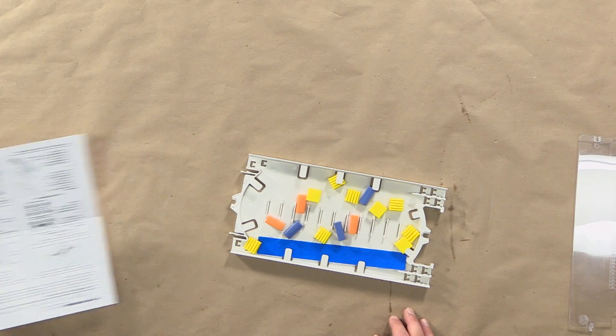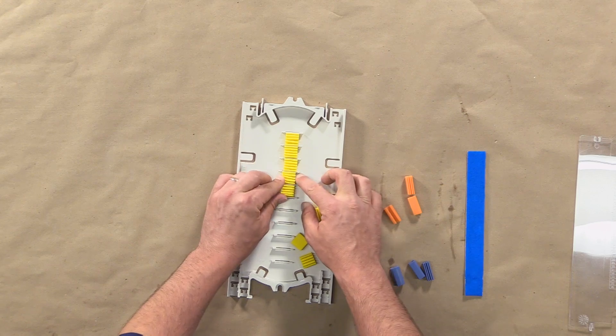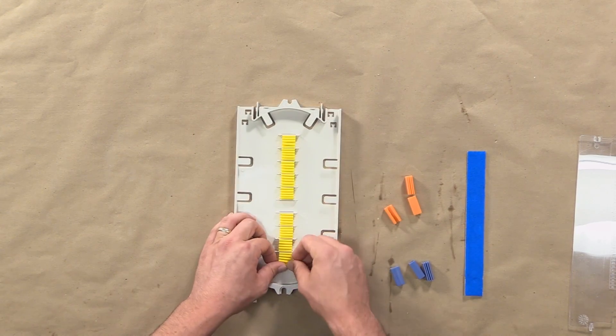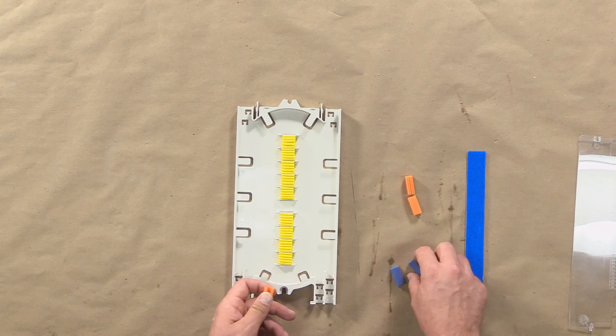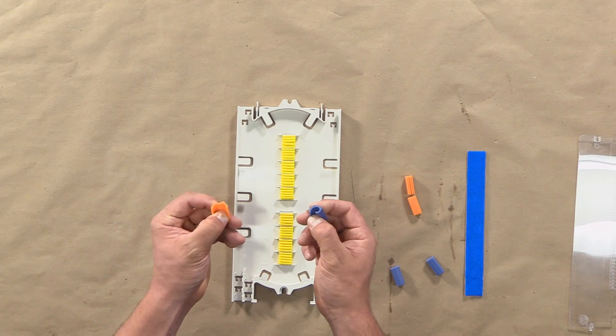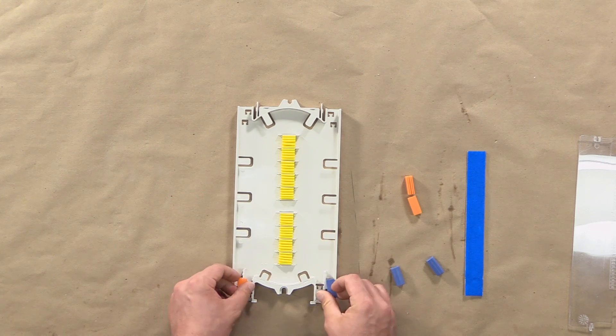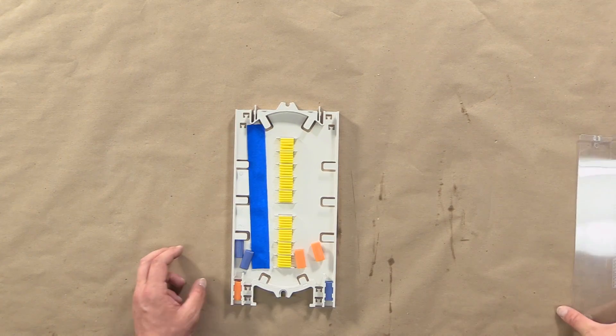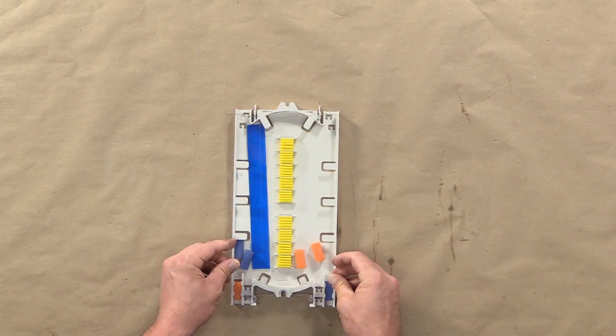Insert yellow light grip splice blocks into the center channels leaving an empty port in the center. Insert the orange and blue open channel retention blocks in the outer slots of the splice tray. Residual contents can be stored in the splice tray until ready to use.